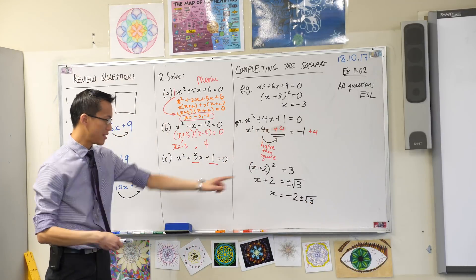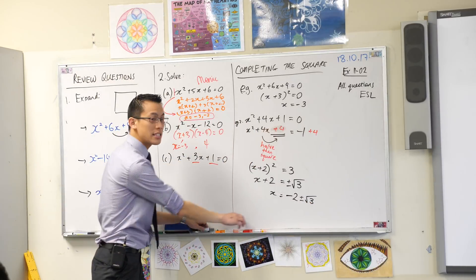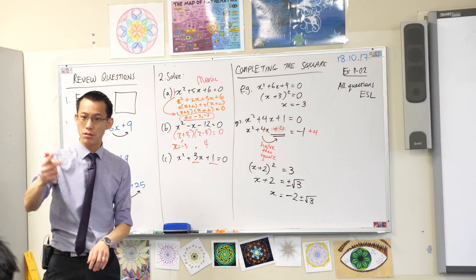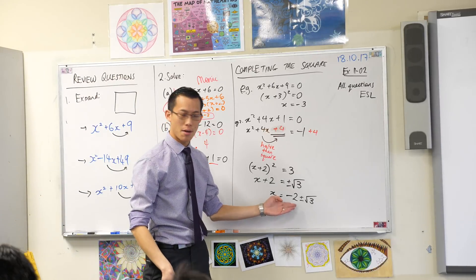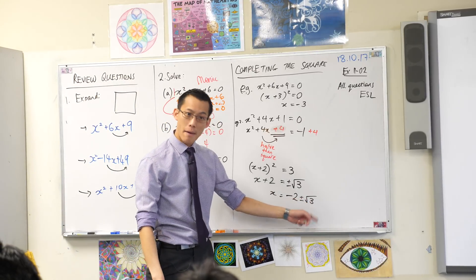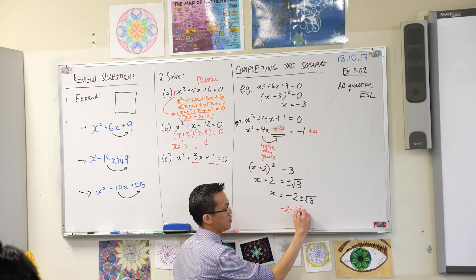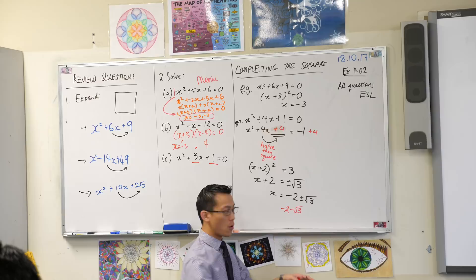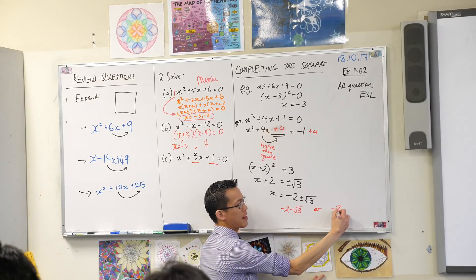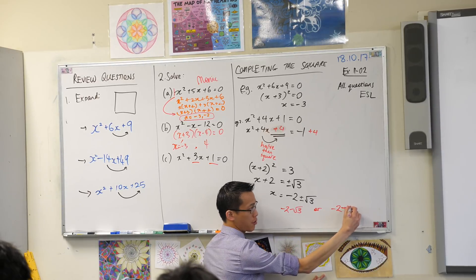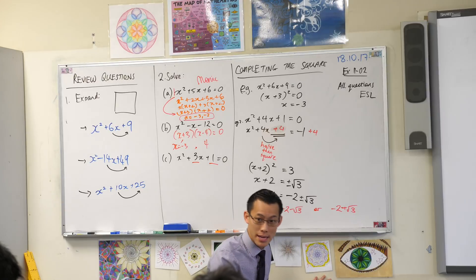Now what does this mean? Well, this is shorthand for two numbers. One of them is -2 - √3, and the other one is -2 + √3. That's what the plus or minus means.